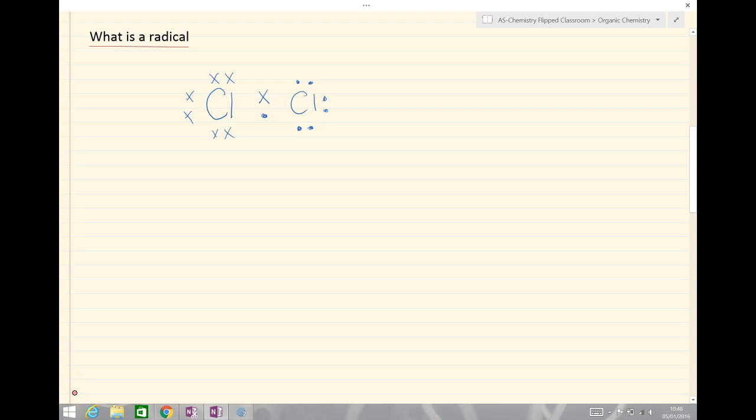So what is a radical? Well, let's take an example of chlorine, Cl2 which is a covalent bond and a shared pair of electrons. If we somehow break that covalent bond and each electron goes back to its original atoms, we end up with this situation.